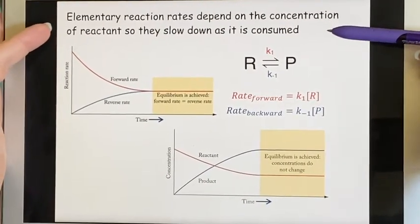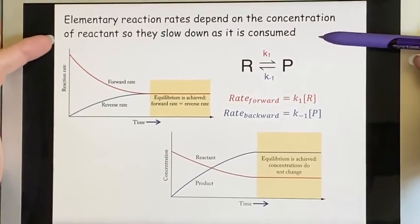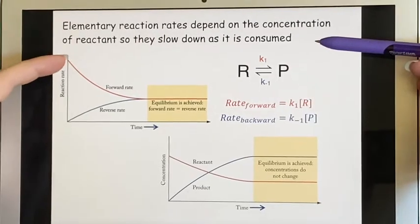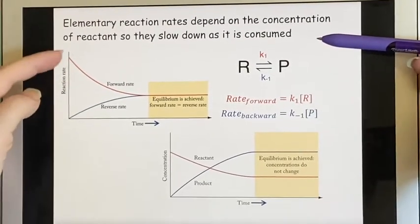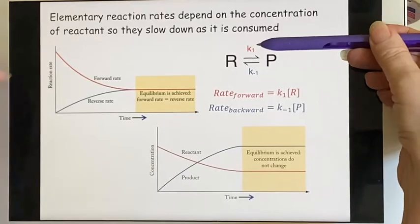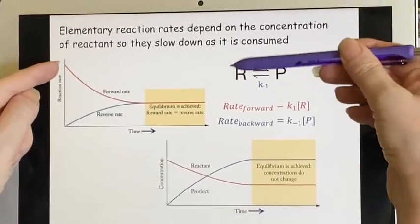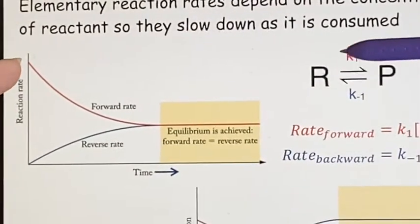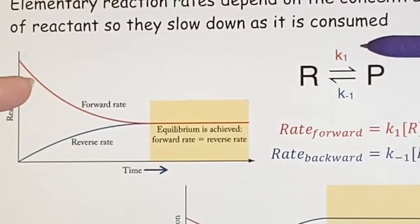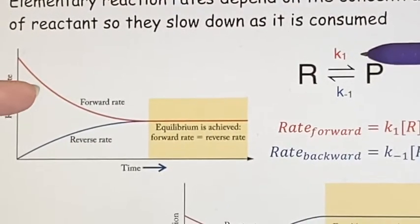Since these elementary reaction rates depend on the concentration, they always slow down as it is consumed. So this is the red one, that's the forward rate. So the forward rate—the reactants, at first there's lots of them, but you start using them up, and so then k1 becomes smaller.